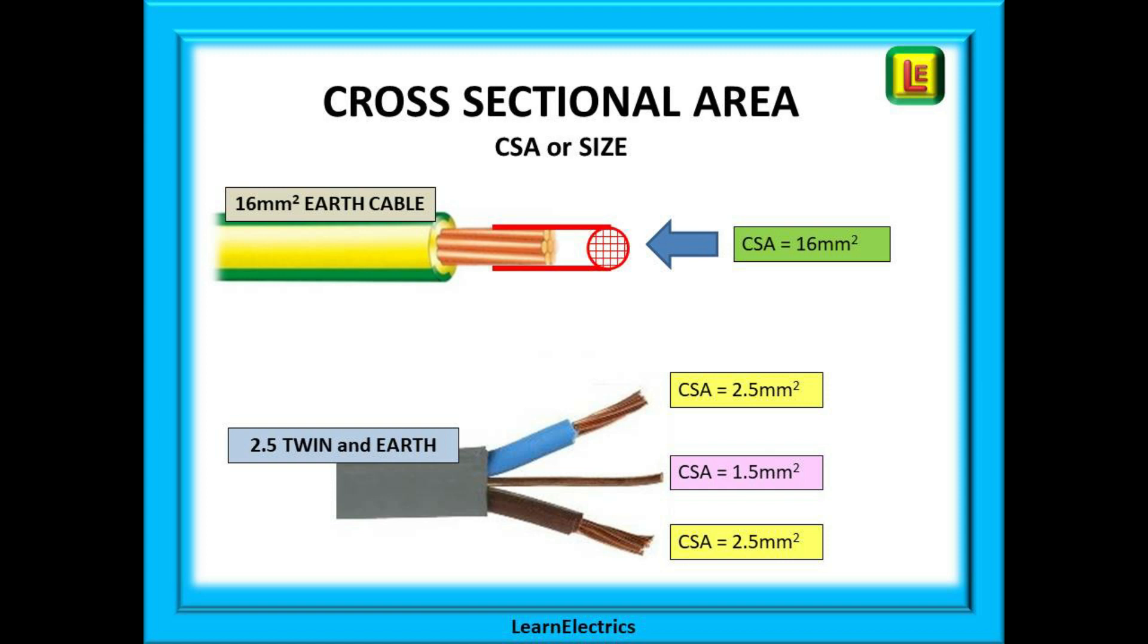We mentioned the size of the cable. We should really say the cross sectional area or CSA. This is not the same as the diameter of the copper. It is the area of the cut surface and it is measured in square millimeters but we often just say 10 mil or 6 mil instead of saying 6 millimeters squared and so on.